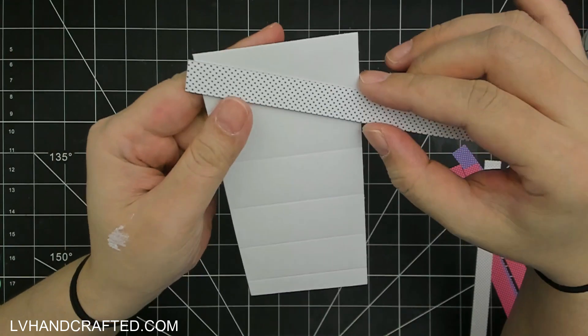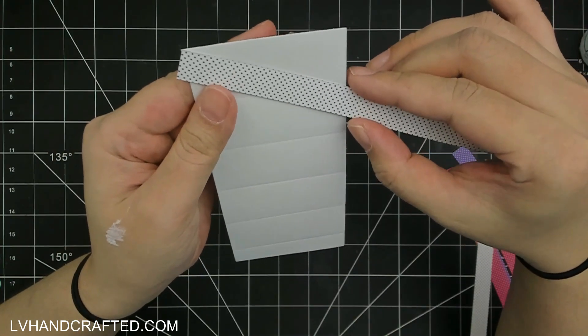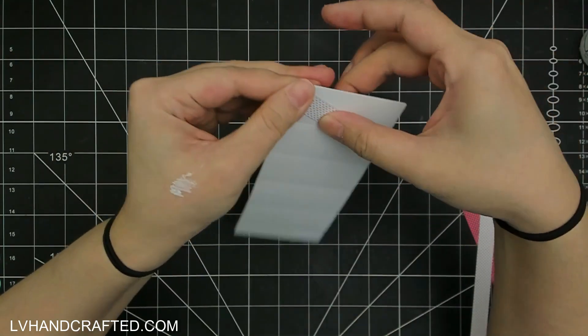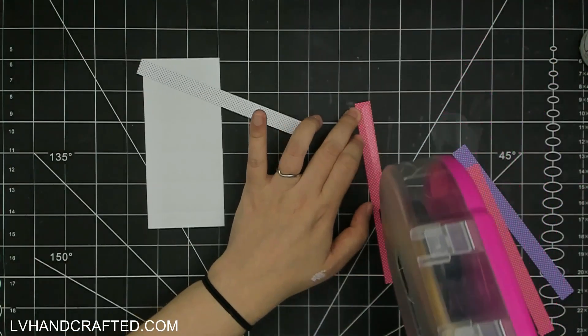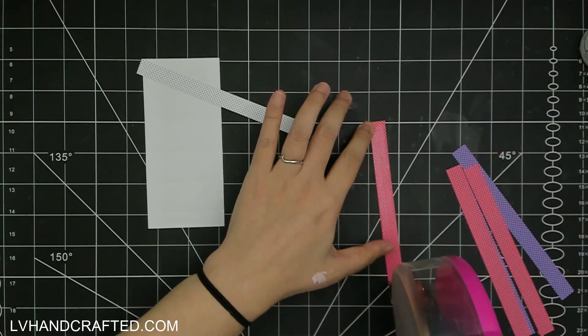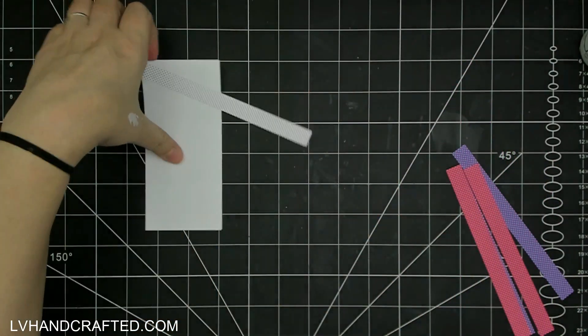So it makes this twisted ribbon effect kind of neat because it's actually using both sides of the same pattern paper, and it does make it seem like it's ribbon that's kind of twisting back and forth.